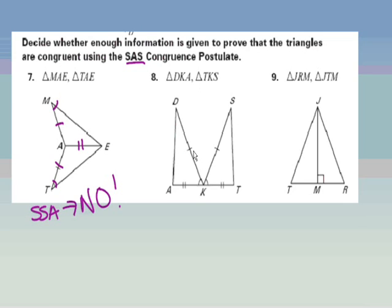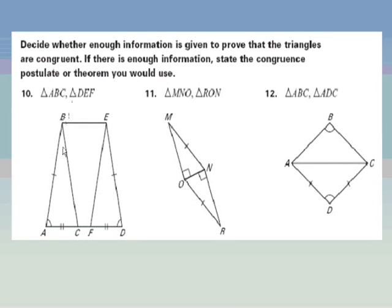Moving on to the next pair of triangles: I have this side and that side, this angle and that angle, and this side and that side. I do in fact have SAS congruency going on here. Are you sensing a trend? Because this is the one I want you to answer in the notes check. Can we prove these two triangles — ABC, DEF — congruent? Yes, these are congruent by side-angle-side congruence.